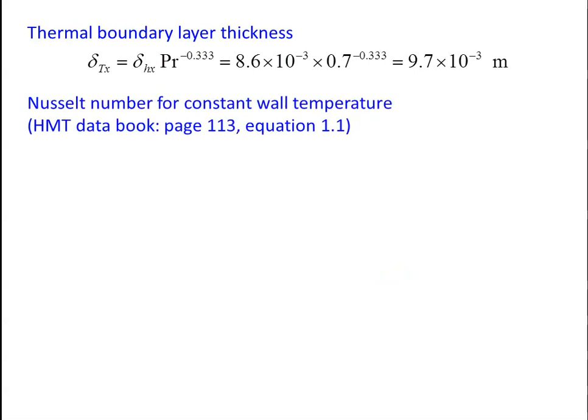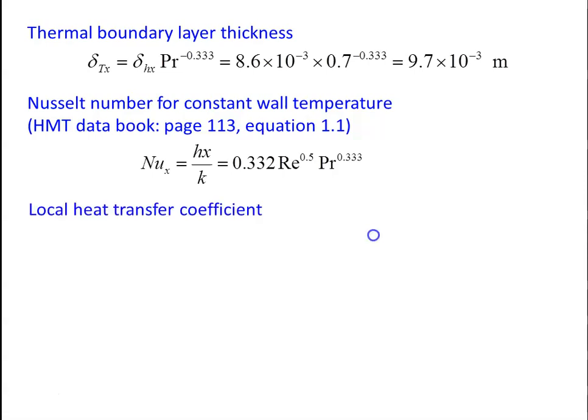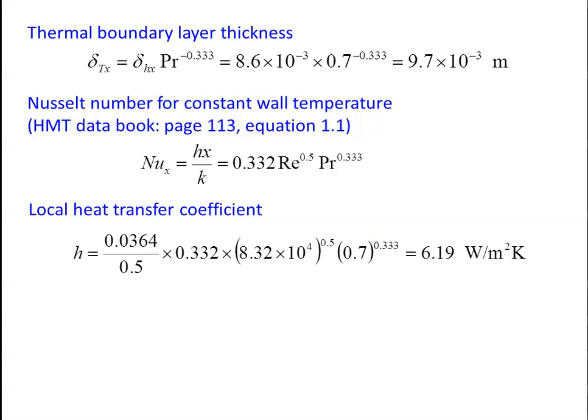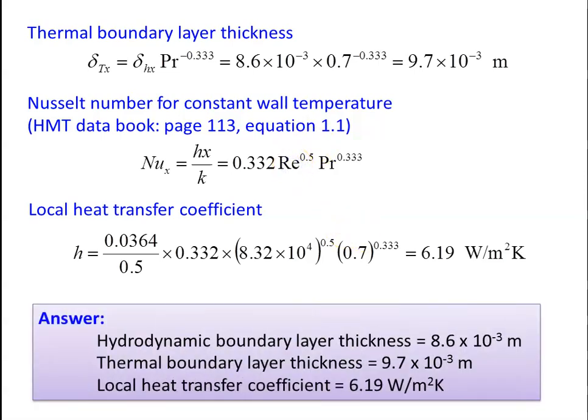Nusselt number for constant wall temperature, equation 1.1, page 113: Nu = hx/k = 0.332 × Re⁰·⁵ × Pr⁰·³³³. Local heat transfer coefficient h = (0.0364 / 0.5) × 0.332 × (8.3 × 10⁴)⁰·⁵ × (0.7)⁰·³³³ = 6.19 W/m²·K. Answers: δH = 8.6 × 10⁻³ m, δT = 9.7 × 10⁻³ m, h_local = 6.19 W/m²·K.